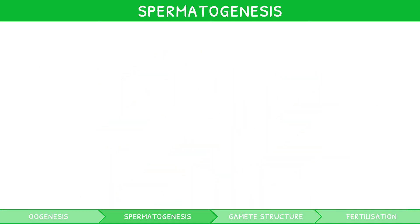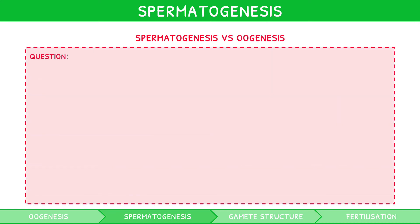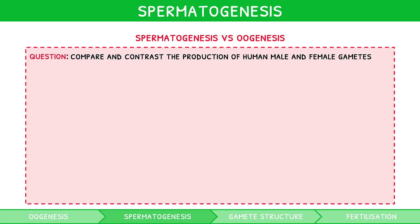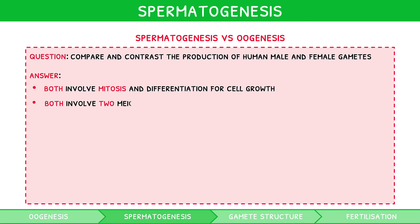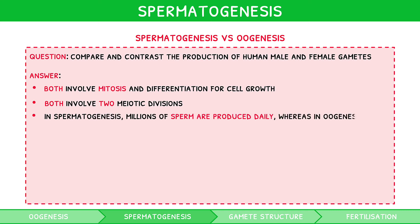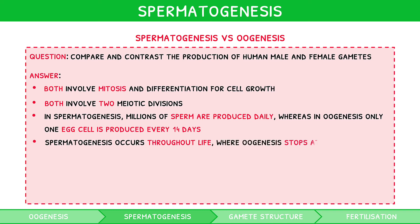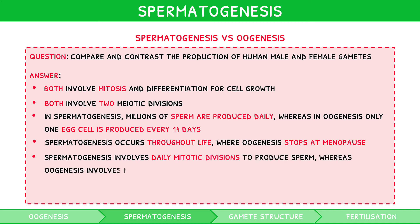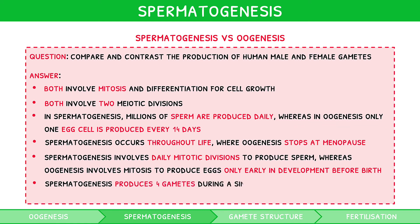A common exam question involves comparison of spermatogenesis and oogenesis. Compare and contrast the production of human male and female gametes. Both involve mitosis and differentiation for cell growth, and both involve two meiotic divisions. In spermatogenesis, millions of sperm are produced daily, whereas in oogenesis, only one egg cell is produced every 14 days. Spermatogenesis occurs throughout life, whereas oogenesis stops at menopause. Spermatogenesis involves daily mitotic divisions, whereas oogenesis involves mitosis to produce eggs only early in development before birth. Spermatogenesis produces four gametes during a single meiotic division, whereas oogenesis produces one gamete and three polar bodies.